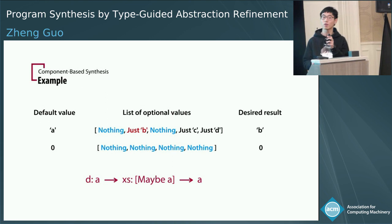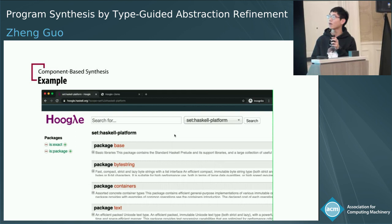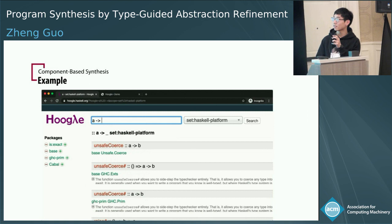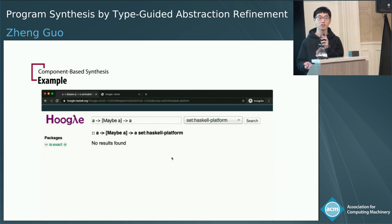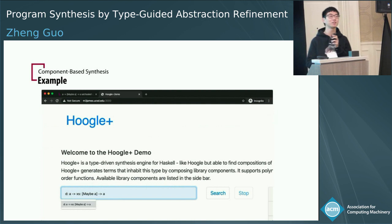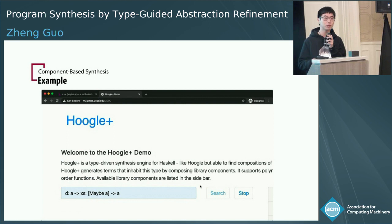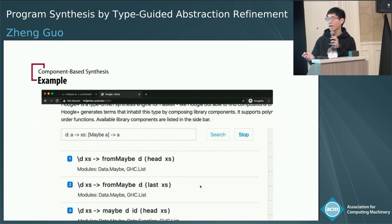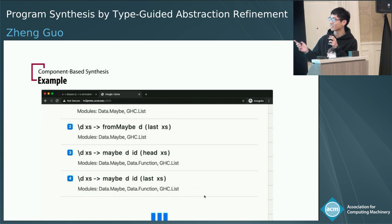Let's check. Haskell programmers will use Hoogle to find some API. If we type this signature into Hoogle, we will see that, unfortunately, there is no single library function that does this task for us. That's why we need Hoogle Plus. Hoogle Plus searches for compositions of library functions for you. If we type the same query into Hoogle Plus, we will find that in several seconds it returns some results for us, and for this specific example our desired solution lies at rank 5.